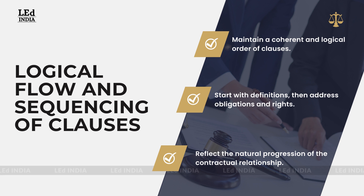Logical Flow and Sequencing of Clauses. Maintaining a logical flow and sequencing of clauses is vital for the overall coherence and understanding of the contract. Arrange the clauses in a logical order, starting with essential provisions such as the definitions, followed by the main obligations, rights, and responsibilities of the parties. Consider the natural progression of the contractual relationship and ensure that the sequencing of clauses reflects this progression. A well-structured contract enhances readability and helps the parties grasp the contractual intent more easily.